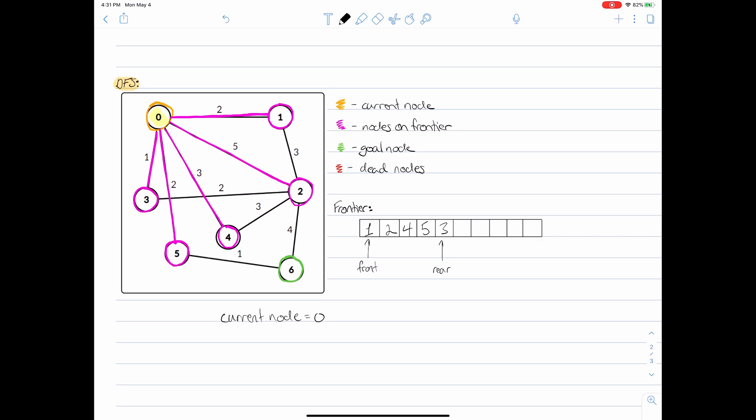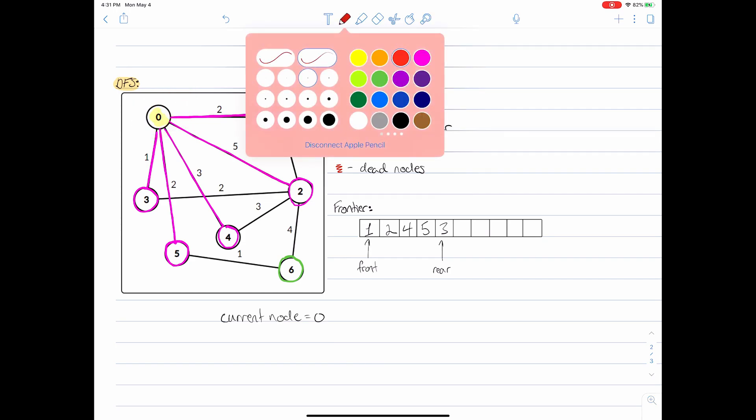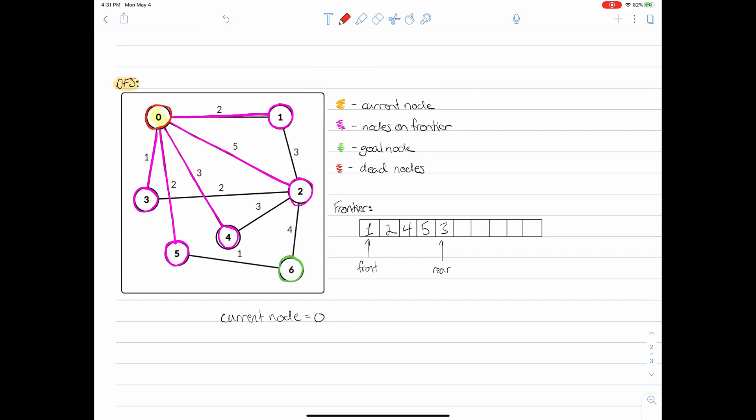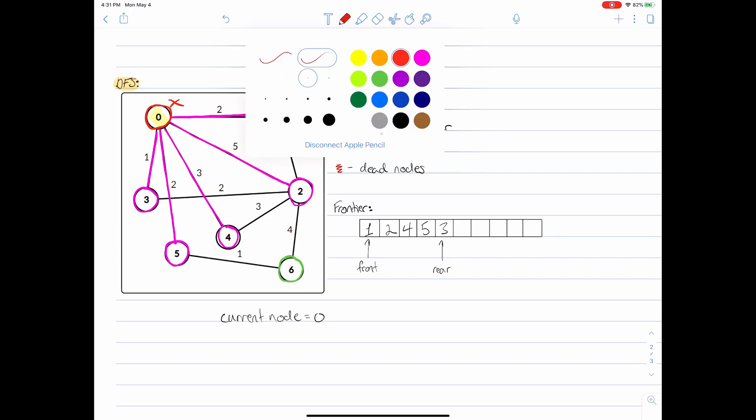We now get to the dequeuing operation. Given that we have exhausted all of the successor nodes of this guy, there's nowhere else that we can go from here. So now we take this guy and we mark him as a dead node. Mark him as a dead node using the red. He's dead. He will never be visited again. He is dead forever.